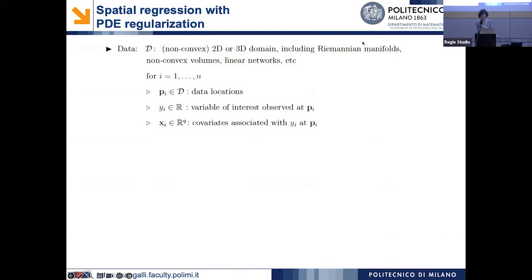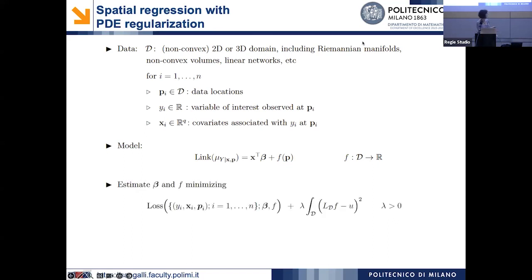I will introduce the estimation problem in the simplest possible formulation. D is the domain over which we observe the data — a two- or three-dimensional domain that can be non-convex, including Riemannian manifolds, non-convex volumes, linear networks, and so on. At locations P_i scattered over D, we observe a variable of interest and possibly a set of covariates. We model the mean of the response conditionally on the covariates and location through a possibly non-linear link function, using a semi-parametric model featuring regression on covariates plus a non-parametric term — a field over the domain D.